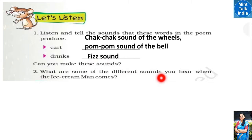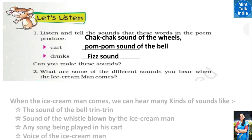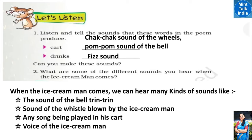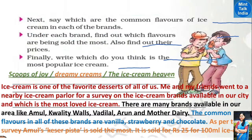Question 2: What are some of the different sounds you hear when the ice cream man comes? (Hamein kaise pata chalta hai ki bahar koi ice cream man aaya hai?) When the ice cream man comes, we can hear: the sound of the bell (tring-tring), the sound of the whistle blown by the ice cream man, any song being played in his cart, and the voice of the ice cream man calling out 'Ice cream le lo, ice cream le lo!' You may include any other sounds you hear.